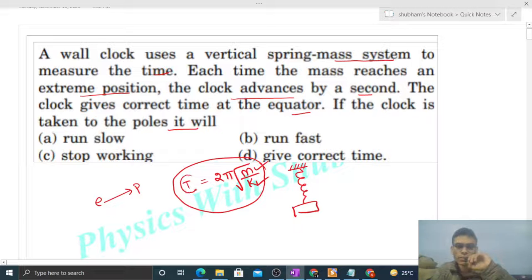It means the time period of the spring-block system won't change. So the clock's time won't be affected because the clock's timing depends on the time period of this system. Each time the block reaches an extreme position, one second passes on the clock.